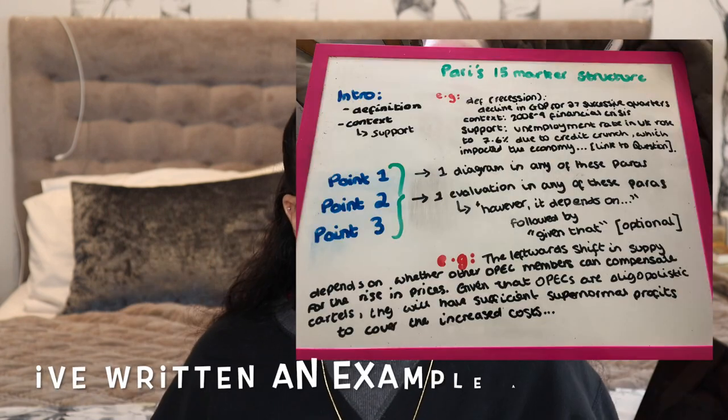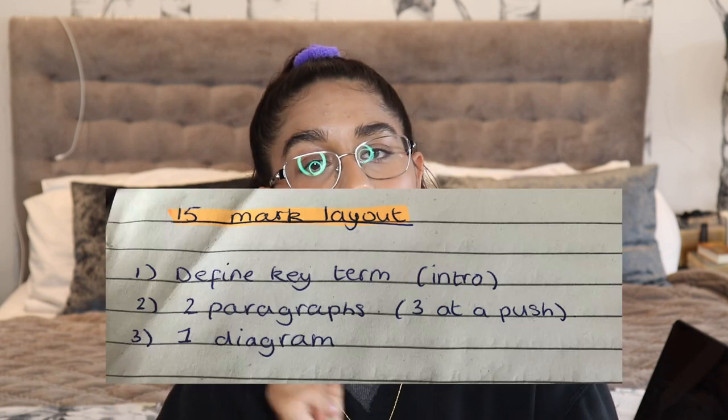In my intro I have a definition and then I have context, same as the standard structure, but I go a bit further and actually support my context. For example, if the question was about recession we'd define it as declining GDP for two successive quarters, then give context like the 2008-2009 financial crisis, and then go a step further — talk about how the recession came into play, what the unemployment rate was, and compare that to recession levels now. You need that extra support and depth.